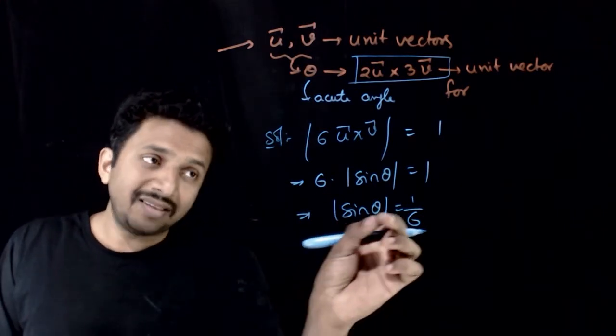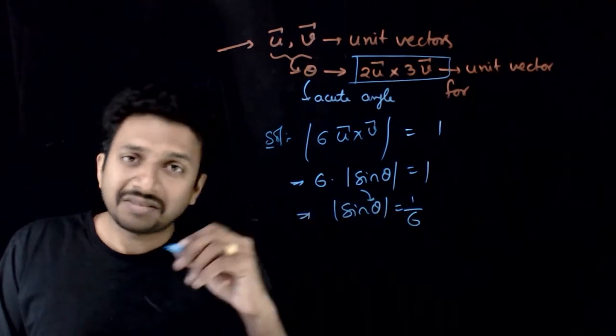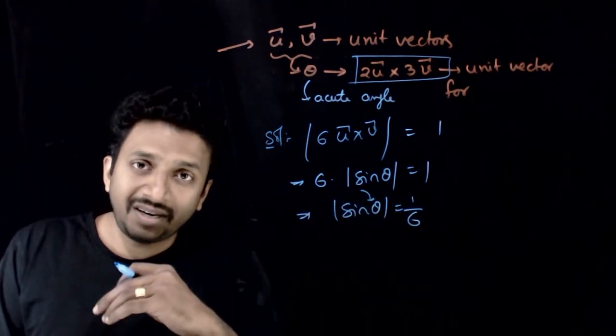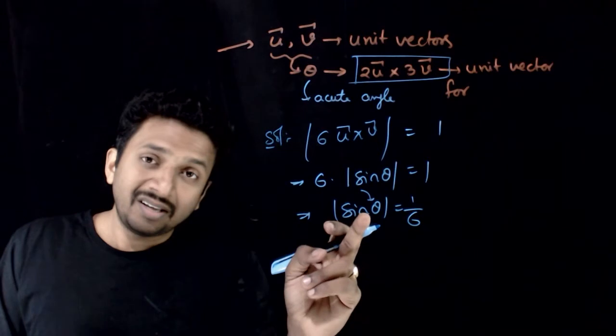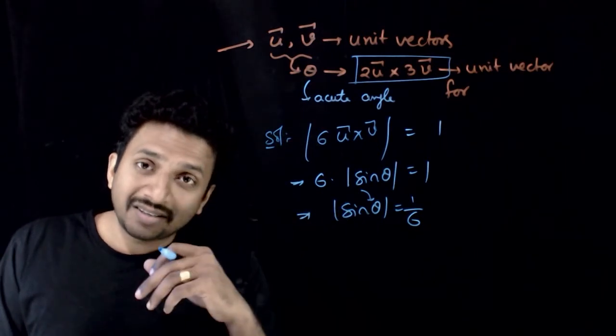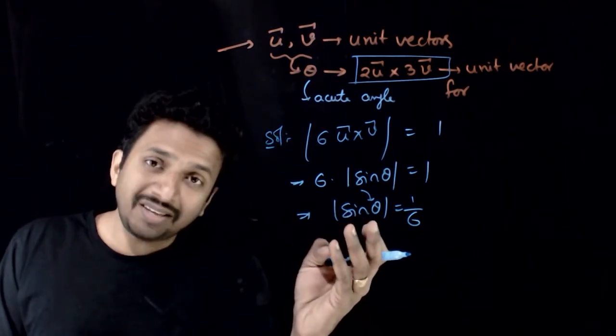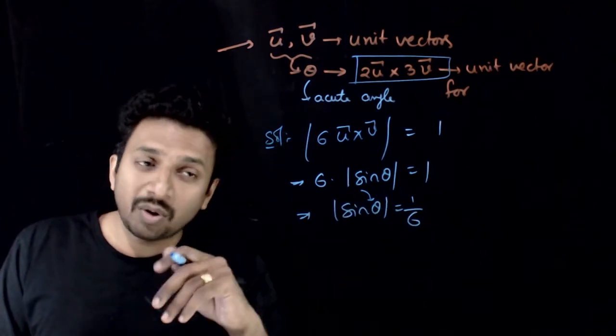Now mod sin theta is equal to 1 and theta is an acute angle, theta is acute angle. That means between 0 and 90 degrees. So how many thetas exist such that mod sin theta is equal to 1 by 6?